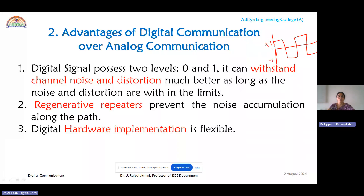Because the digital signal has only two levels, it can withstand channel noise and distortion. Even when noise has accumulated, it can be easily removed from a digital signal compared to an analog signal. The reconstruction of the digital signal is therefore better compared to analog. This holds true when the noise and distortion levels are within permissible limits.